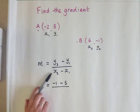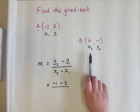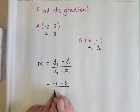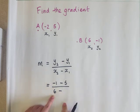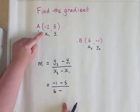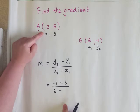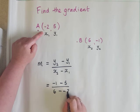On the bottom line, we have the second x-coordinate, which is this one here, 6. And then I'm going to take away the first x-coordinate, which is negative 2. So I will have 6 take away negative 2.